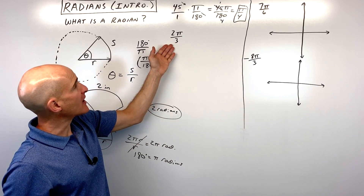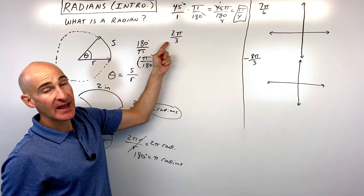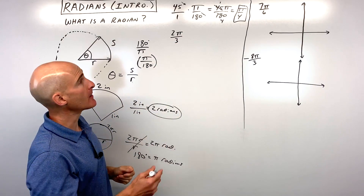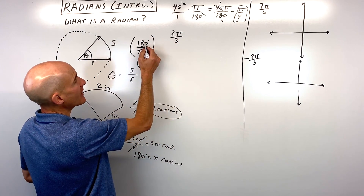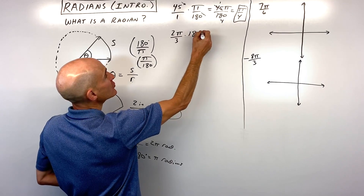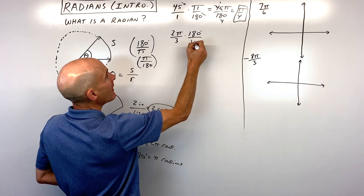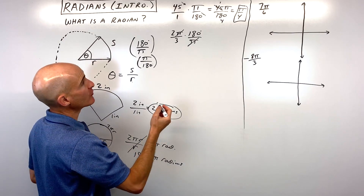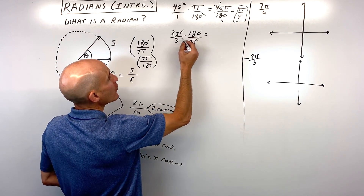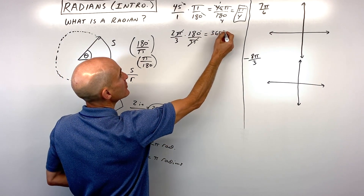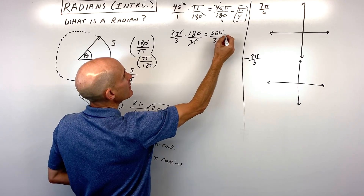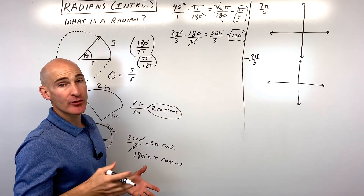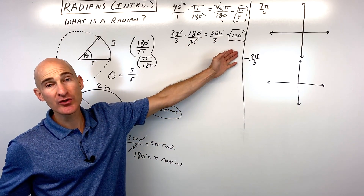Now if we want to go the other direction — given an angle in radians like two pi over three, notice there's no degree symbol — we use the conversion factor 180 degrees for every pi radians. The pi in the denominator cancels with the pi in the numerator. Multiplying horizontally across gives us 360 divided by three, which is 120 degrees. And now you've converted from radians into degrees.